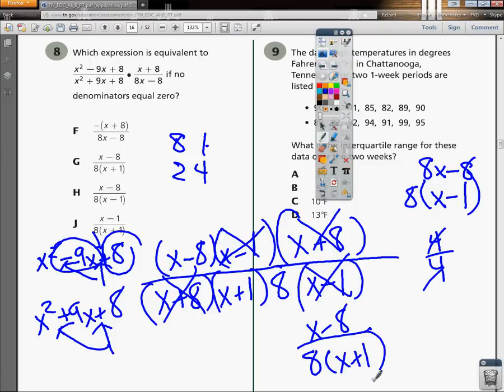So if I look at my answer choices and see if there's anything possibly left for me to pull out, the only two that have x minus 8 would be g and h. And it says in the denominator x plus 1. So it has to be g because if it was a minus, it would be h. But in this case, it's g.